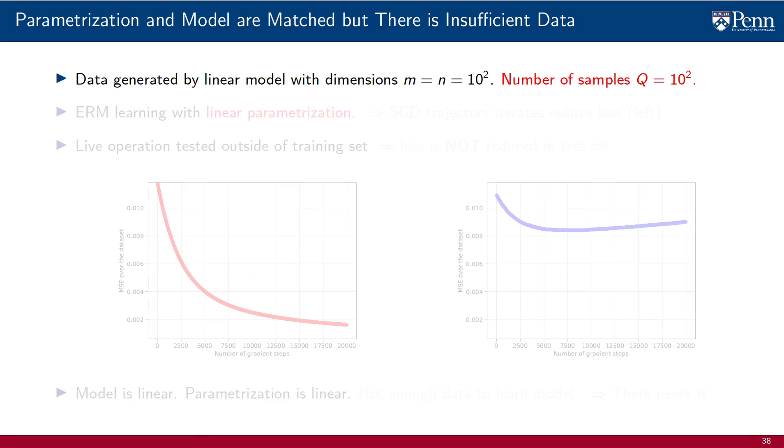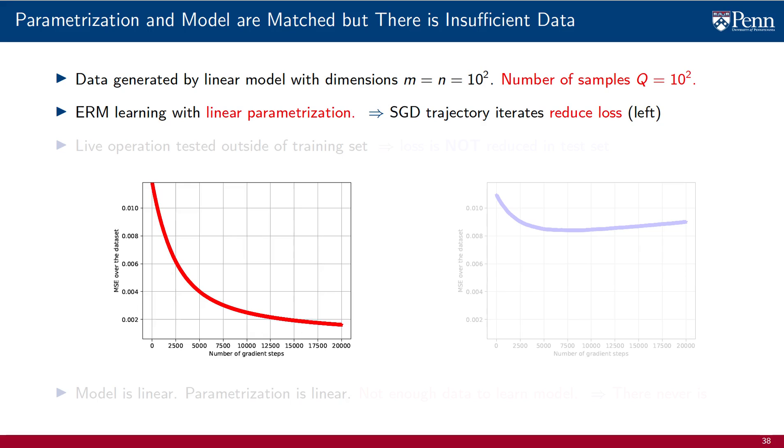Our third example is perhaps the most interesting. We go back to the linear model. We retain the dimensions of the input and output data, but reduce the number of samples to Q equals 100. We are still learning with a linear parametrization. And we see that SGD reduces the loss, because SGD succeeds at solving ERM. And since the model and the parametrization are matched, the loss converges to a small value. We are learning to predict outputs within the training set.